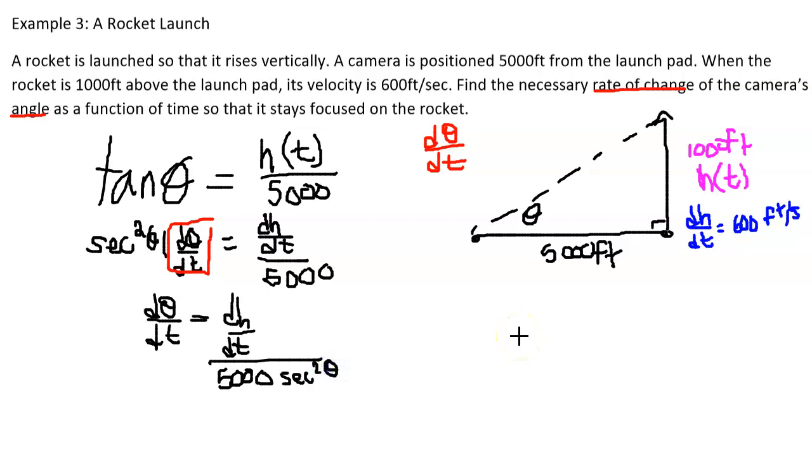All right, let's find all of the unknowns that we need on the right hand side. First is dh/dt. We actually know that as 600 feet per second, but we also need to know what secant squared is. Now, this is our right triangle trig problem, and we actually have the ability to find secant.